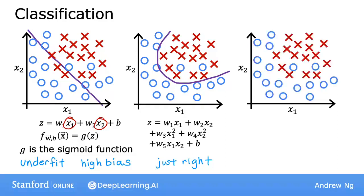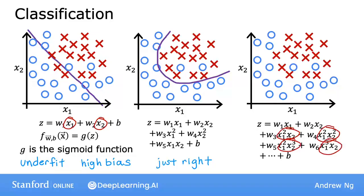And finally, at the other extreme, if you were to fit a very high order polynomial with many, many features like these, then the model may try really hard and contort or twist itself to find a decision boundary that fits your training data perfectly. Having all these high order polynomial features allows the algorithm to choose this really overly complex decision boundary. If the features are tumor size and age, and you're trying to classify tumors as malignant or benign, then this doesn't really look like a very good model for making predictions. So once again, this is an instance of overfitting and high variance, because this model, despite doing very well in the training set, doesn't look like it will generalize well to new examples.